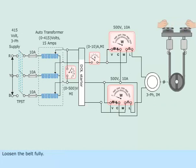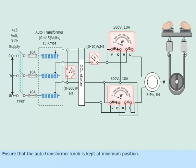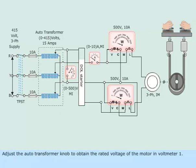Loosen the belt fully. Ensure that the auto transformer knob is kept at minimum position. Switch on the power supply to the motor. Adjust the auto transformer knob to obtain the rated voltage of the motor in voltmeter 1.